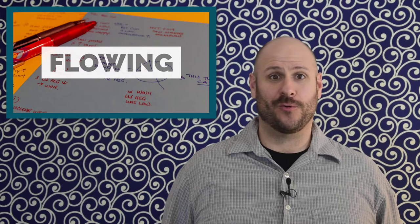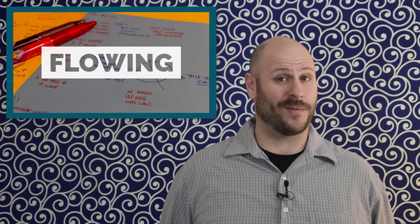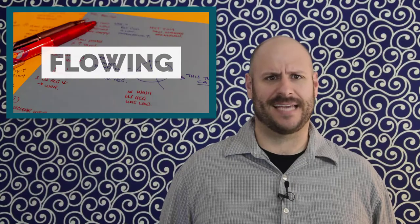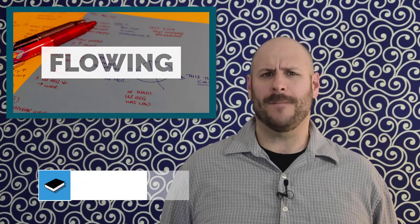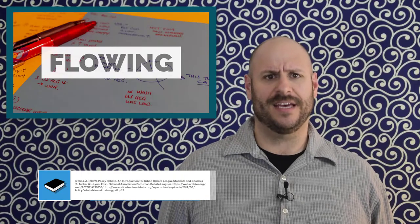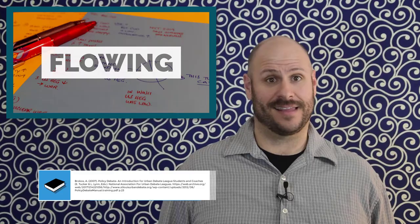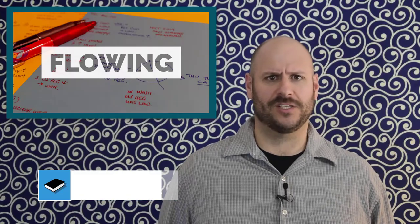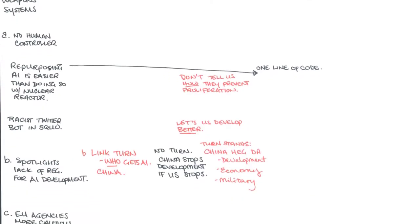Beyond that, flowing is also critical to refuting the arguments of your opponents. A record of what has been said lets you systematically attack your opponent line by line. Debating line by line means responding systematically to the other team's arguments one by one in the order that they were made. This is only possible if you have a flow of what they said.